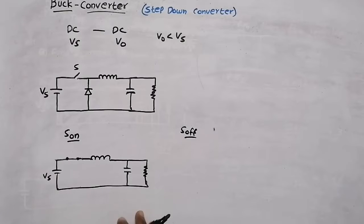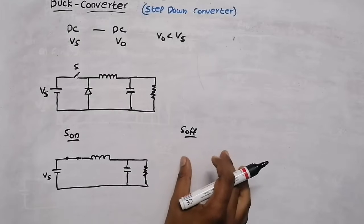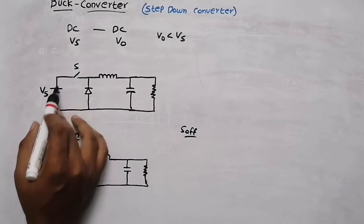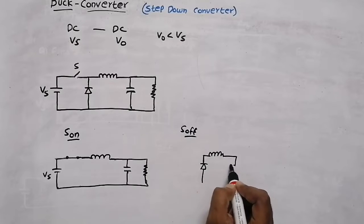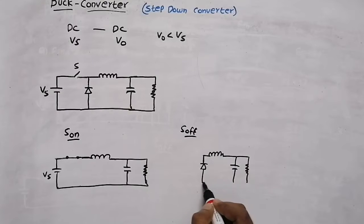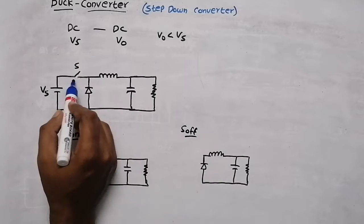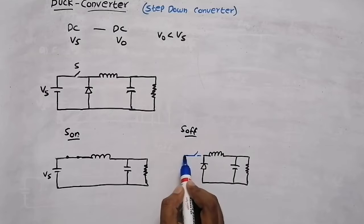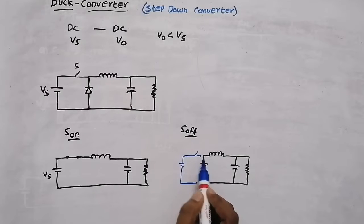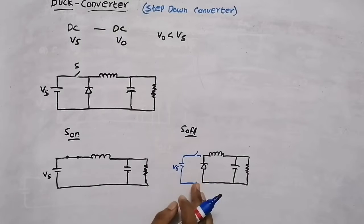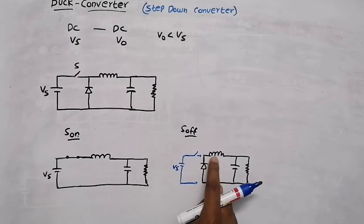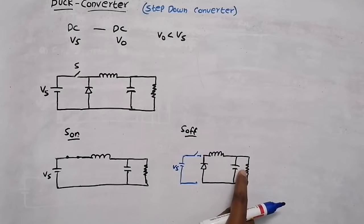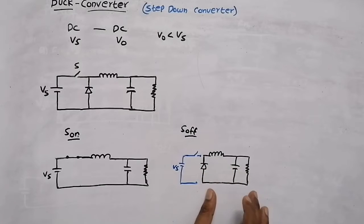In Mode 2, when the switch is off, the circuit is open. The source voltage is not connected to the load. As we said, when the switch was on, the inductor stored energy. When the switch is off, the stored energy in the inductor is released through the capacitor and the resistor. The stored energy circulates through the diode.